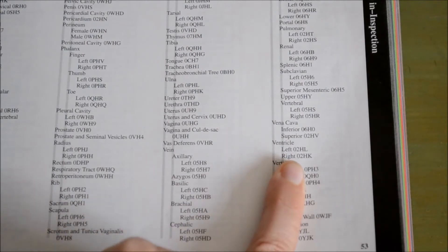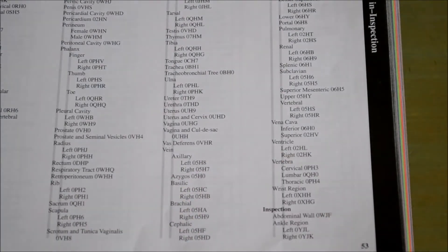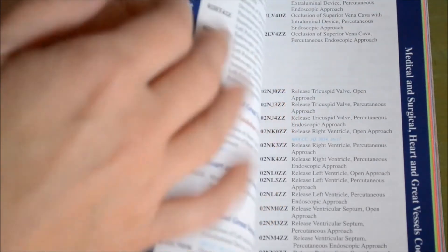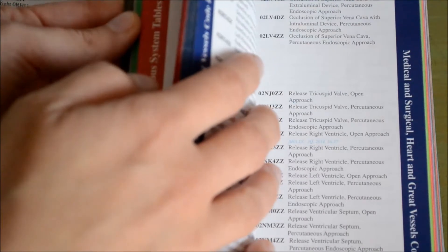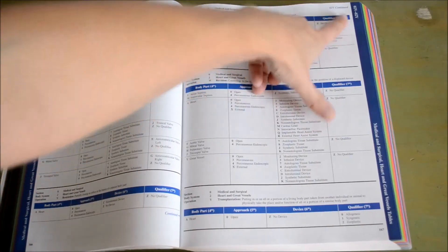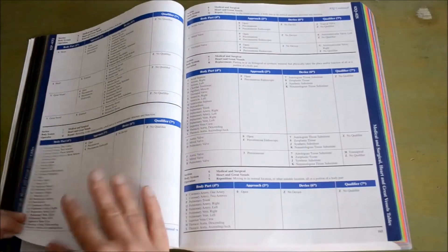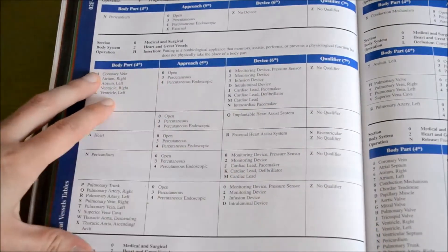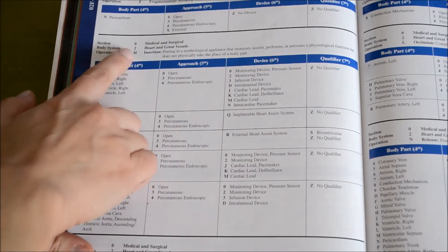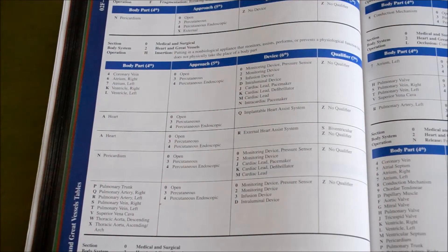In the index under ventricle, the subterms give left or right. Since this code is on the right side of the heart, it says right: O2HK — giving us the first four characters. We then go into the medical and surgical section, which is the very first section. Characters are in alphabetical or numerical order, so we want to go to O. On the sides of the pages they show ranges like O2V through O2Y, and we want O2H. We found it: O2H — section O, medical surgical; body section 2, heart and great vessels; operation H, insertion.